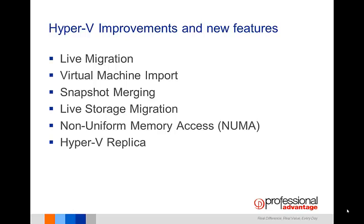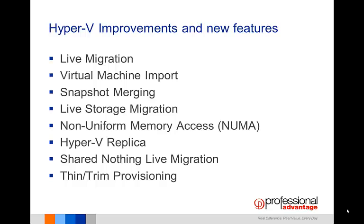Hyper-V Replica is a new feature in Windows Server 2012 that offers an affordable, in-box business continuity and disaster recovery solution, providing the ability to quickly recover business functions during downtime with minimal or no data loss. Asynchronous replication of virtual machines occurs over a network link from one Hyper-V host at a primary site to another at a replica site, and in the event of a failure, administrators can manually failover production virtual machines to the recovery site. Shared Nothing Live Migration allows live migrations of a virtual machine from one host to another over just a network cable, with no shared storage or Windows cluster required. Thin provisioning within Hyper-V allows you to specify a VHDX file with a maximum size larger than available physical space, while trim provisioning allows you to reclaim storage from a VHDX file that is no longer needed.